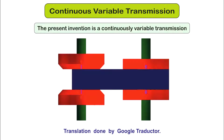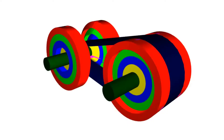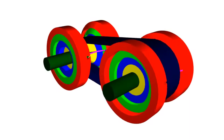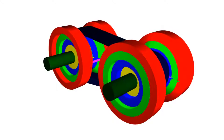The present invention is a continuously variable transmission formed by two shafts whose turning radii vary inversely proportional, in which the drive shaft transmits its rotation to the driven shaft by means of the drive belt.